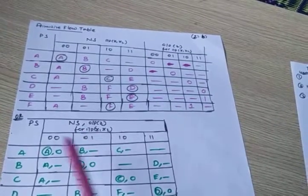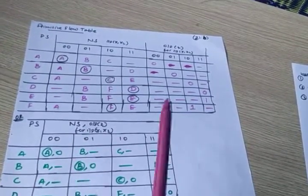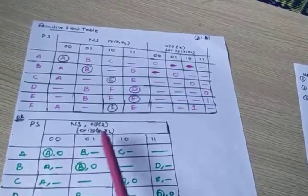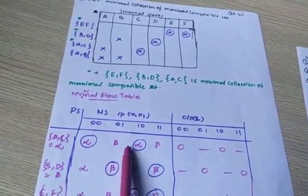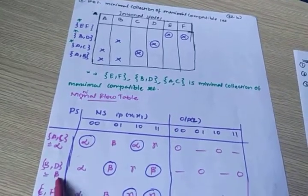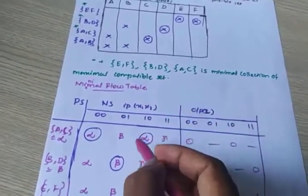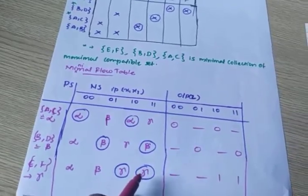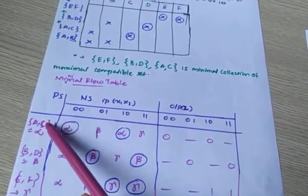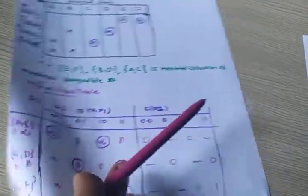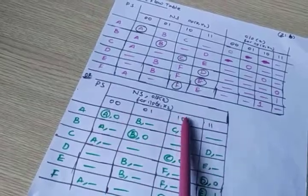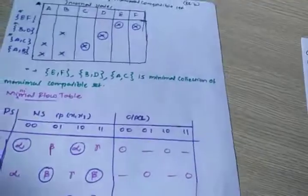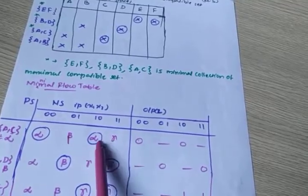For A, the necessary state is considered once since A and C are in the same set. For A with input one-zero, look at the table: it gives C only. C belongs to ALPHA, so you put ALPHA. For A with input one-one, it is don't care. For C with input one-one, the next state is E. E is GAMMA, so you write GAMMA here.